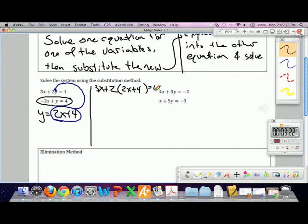So 3x plus 2 times 2 is 4x, plus 8 equals 1. Combine like terms, 7x plus 8 equals 1. 7x equals negative 7. x is therefore negative 1.